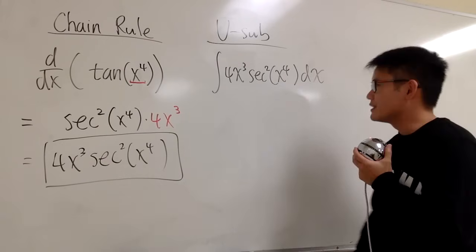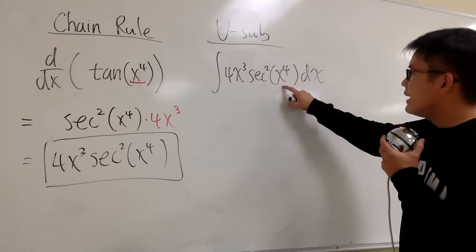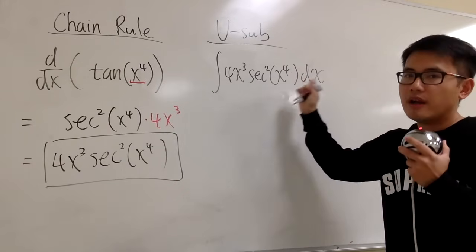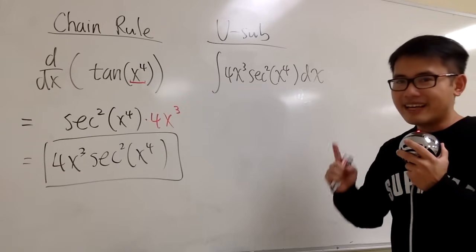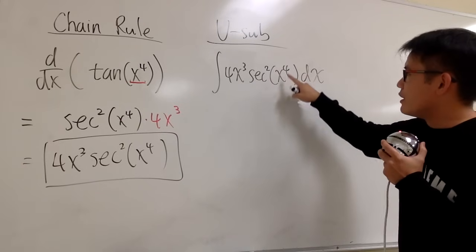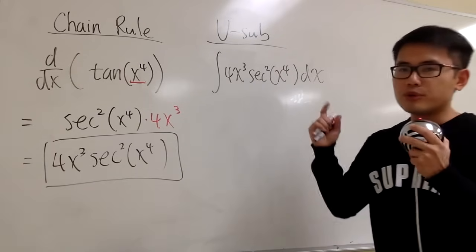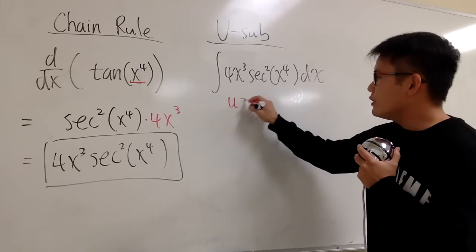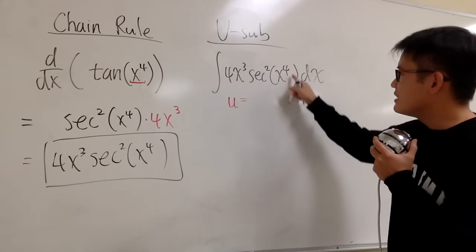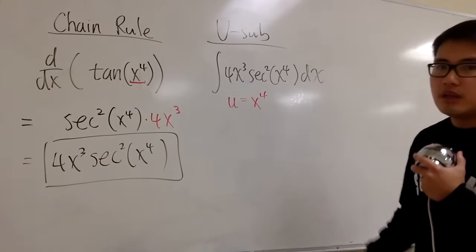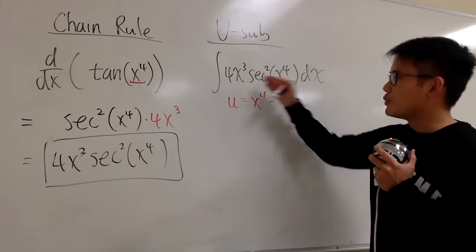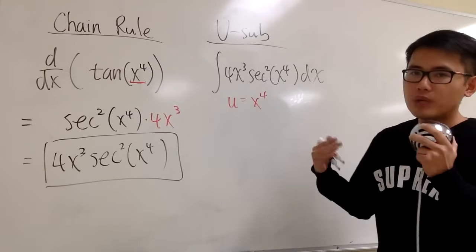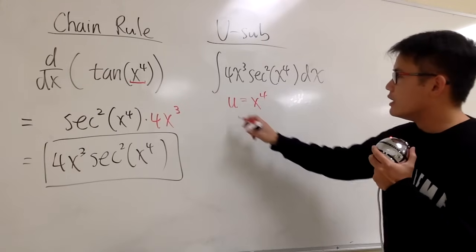So this is how we're going to do it. We have secant squared with the inside being x to the fourth power. Imagine if you had to take a derivative — this part is usually what requires the chain rule. That makes it the candidate for u. So I'm going to set x to the fourth power to be u. We let u equal to the inside function, in this case x to the fourth power. u is usually the part that requires the chain rule if you imagine this was a derivative. So, u equals x to the fourth power. Next, we differentiate both sides.